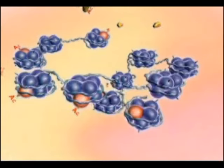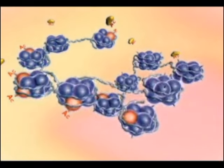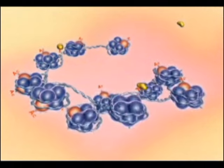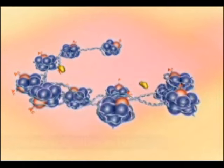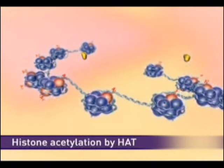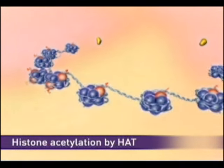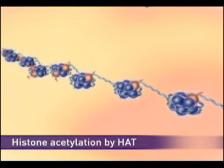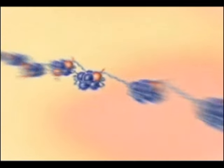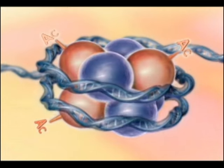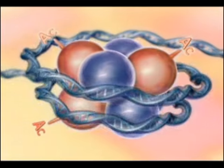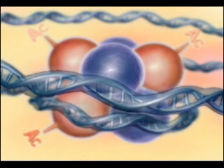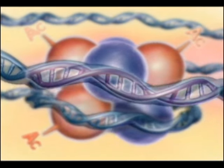For a gene to be transcribed, it must become physically accessible to transcriptional machinery. Acetylation of histones by HAT causes uncoiling of DNA and an open chromatin structure. This causes genes to become accessible to transcription factors, allowing gene expression to occur and proteins to be made.